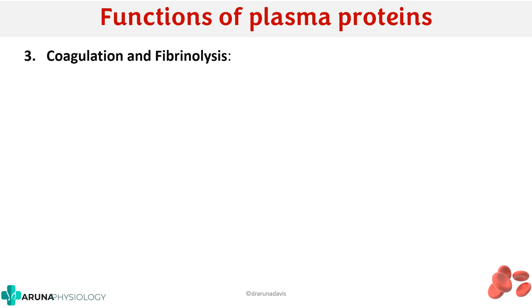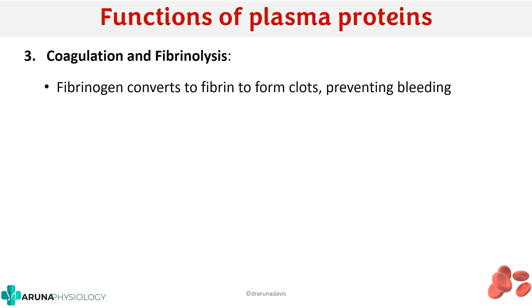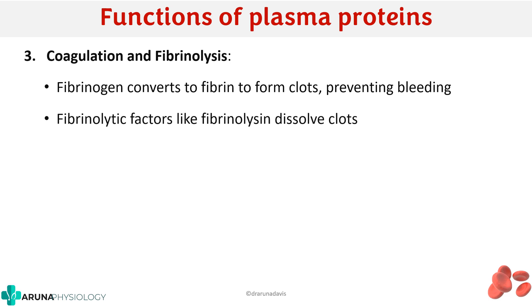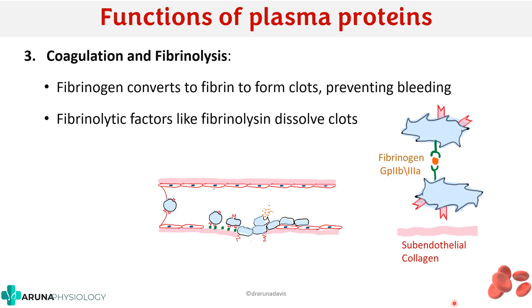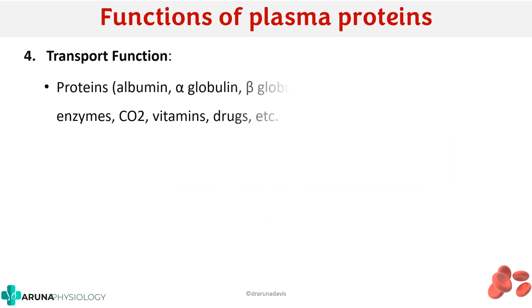The next important function is in coagulation and fibrinolysis. Fibrinogen is the plasma protein involved in coagulation — it is converted to fibrin, which forms a net-like structure and prevents bleeding. Fibrinolytic factors like fibrinolysin dissolve the clot. Fibrinogen also has a role in the formation of the temporary platelet plug, as the interlinking of platelets is via fibrinogen.